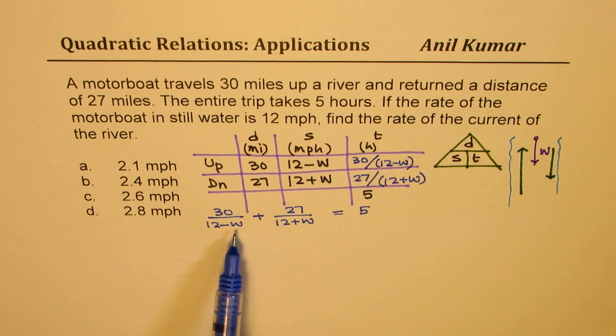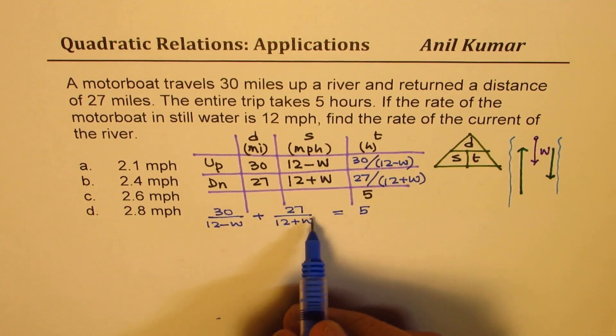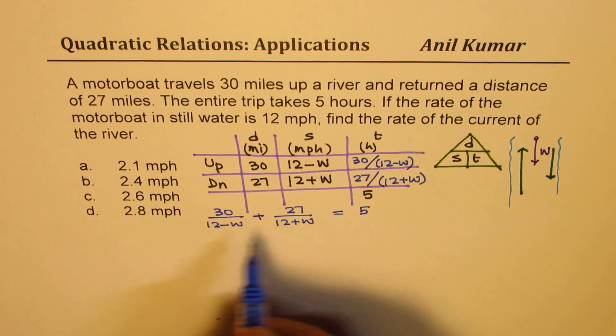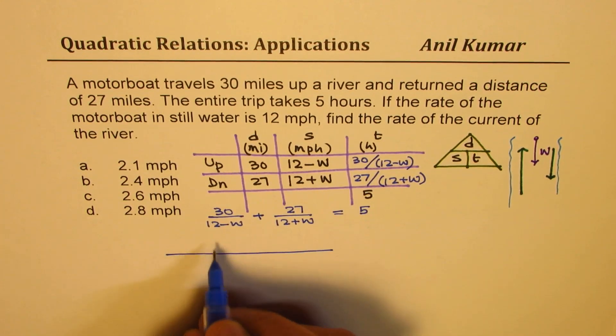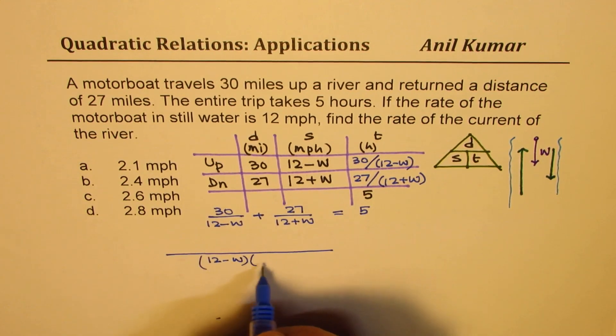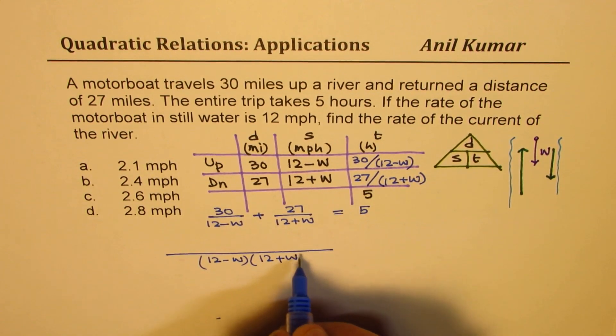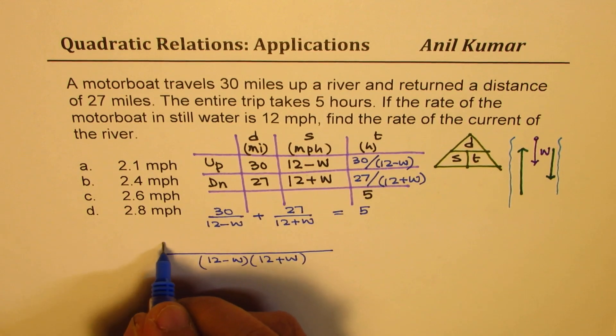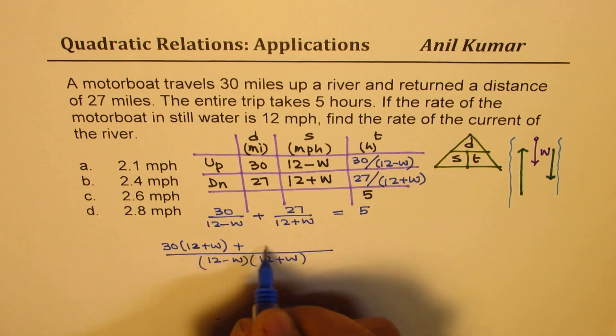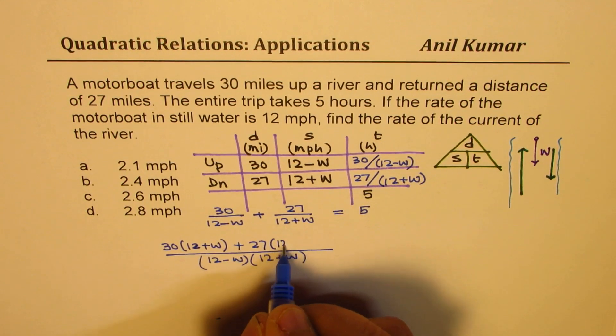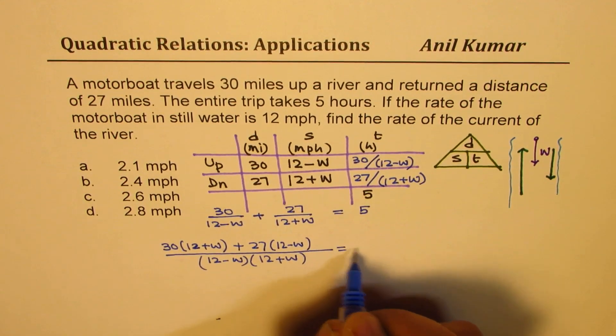Now it's a question of isolating w and finding its value. There's only one variable in our equation, so it's not a very difficult job. Now, to do it, we need to take the common denominator, so let me extend it on this side, which is 30 times 12 minus w times 12 plus w, it gets cross-multiplied, so we get 30 times 12 plus w plus 27 times 12 minus w. That should be equal to 5.